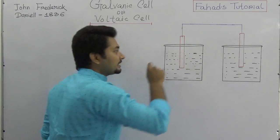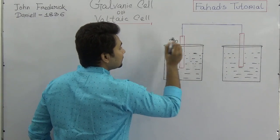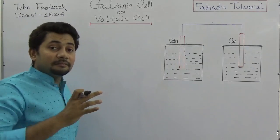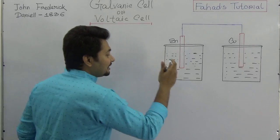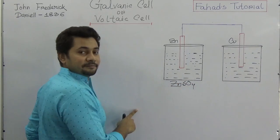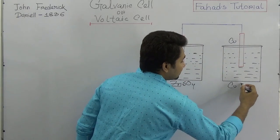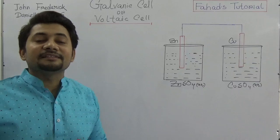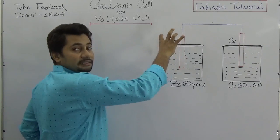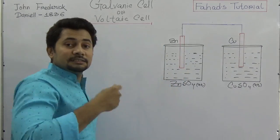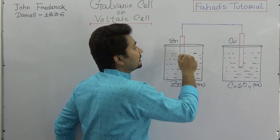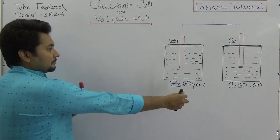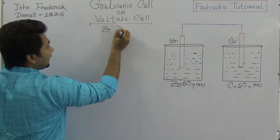We know that an electric conductor allows the flow of electrons, and the electrolyte also works as an electric conductor. In this container, the more reactive metal is zinc, and the less reactive metal is copper. The zinc metal is submerged into a similar type of solution, which is zinc sulfate in aqueous form. Copper is submerged into copper sulfate solution, also in aqueous form.